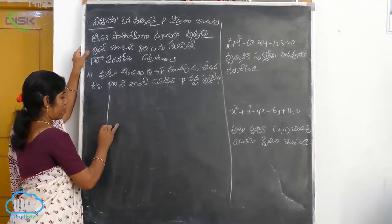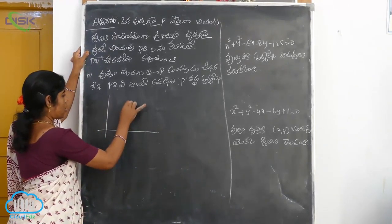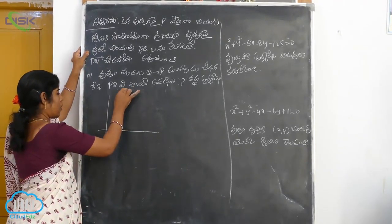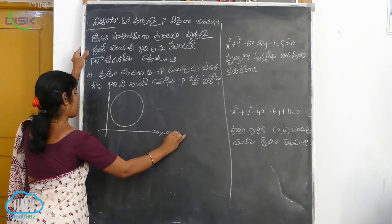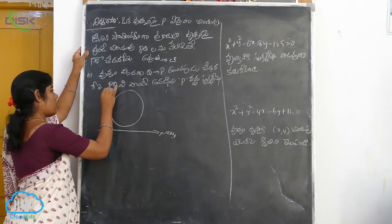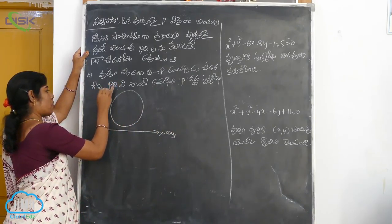If you see the picture, you will get to understand easily. The diagram is not there. So, it is the x-axis. It is the y-axis.